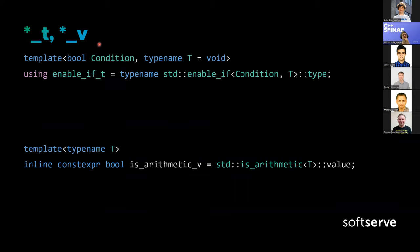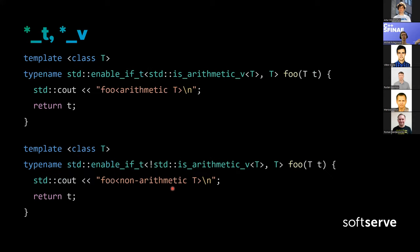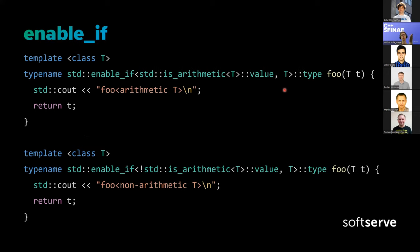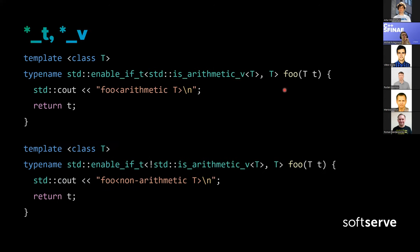Similarly, with _v suffixes — for example, std::is_arithmetic always required ::value before. Since C++17, the _v variants came in, so you can just write is_arithmetic_v<T> and it would be the same. The same example we had previously would now look like this with enable_if_t<std::is_arithmetic_v<T>>. I think it's a little bit more readable and shorter.